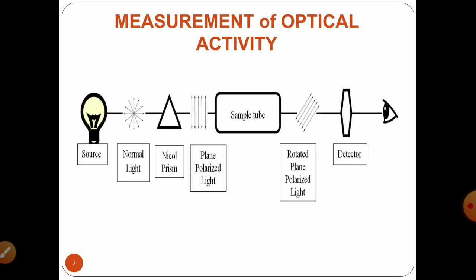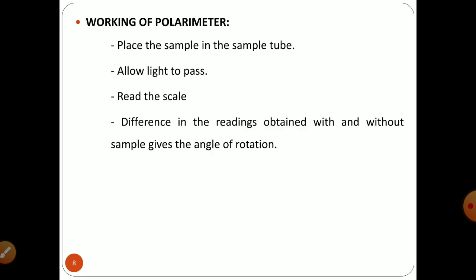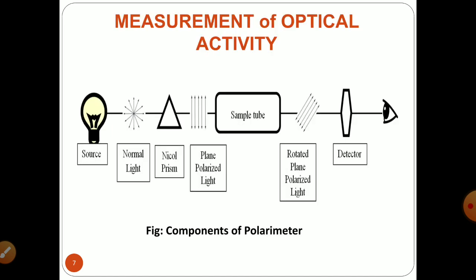To measure optical activity, the instrument used is known as a polarimeter. The basic components of a polarimeter are: a source of light, a polarizer to convert the ordinary beam of light into plane polarized light, a sample tube to hold the optically active substance whose optical rotation is to be measured, and an analyzer or detector. Each component — the source of light, polarizer, sample tube, and analyzer — has an influence on its working.